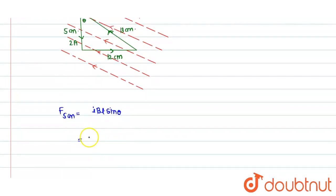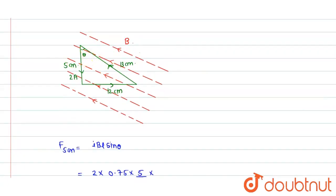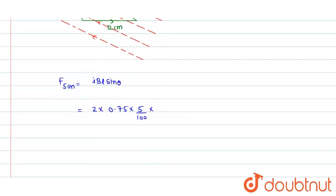Toh yahaan se I value kitni hai? 2 ampere times B kitna hai? 0.75 tesla times length kitni hai? 5 cm matlab 5 divided by 100 meter times sine theta. Sine theta kitna hai? For this angle, perpendicular divided by hypotenuse, perpendicular 12 by hypotenuse 13, matlab 12 divided by 13.